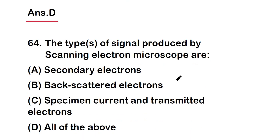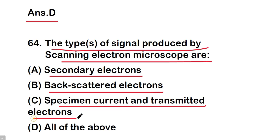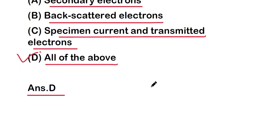Next question: what are the types of signals produced by scanning electron microscope to scan the object or microorganisms? These are secondary electrons, backscatter electrons, specimen current, and transmitted electrons.